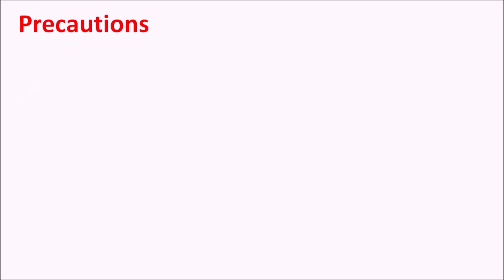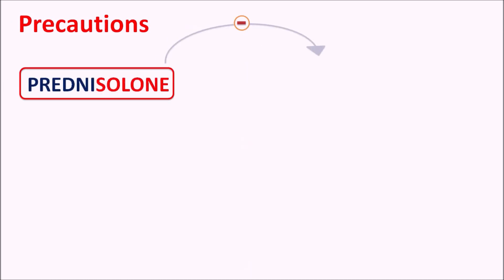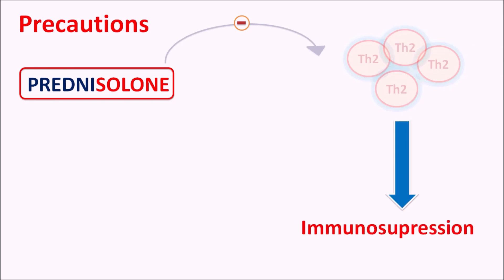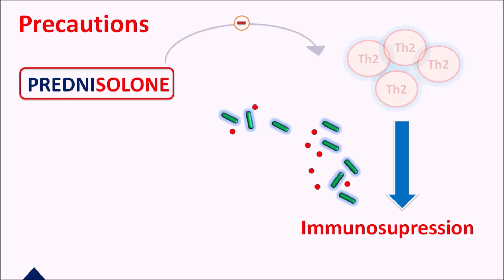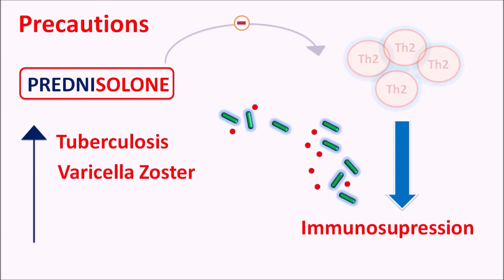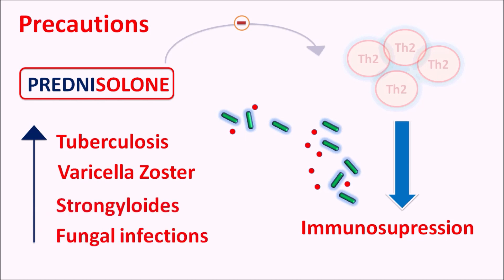One important precaution of prednisolone is that this drug reduces immunity — T cell activity is reduced, resulting in immune suppression. This drug can increase the risk of infections. If a patient already has any previous history of infections, they can be further increased. Prednisolone can increase latent tuberculosis, varicella zoster infection which produces chickenpox, as well as bloodstream infections and fungal infections. So bacterial, viral, fungal, and amoebic infections may all be increased by prednisolone. Care should be taken to check for any symptoms of infections in patients when this drug is used for long-term periods.